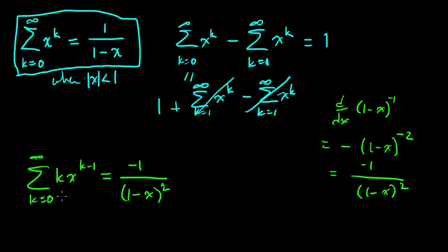When k is 0, the 0th term drops out, so we can rewrite this as the sum from k equals 1 to infinity of the same thing.